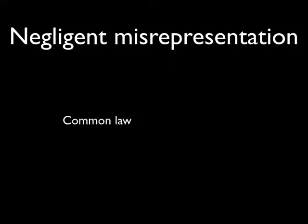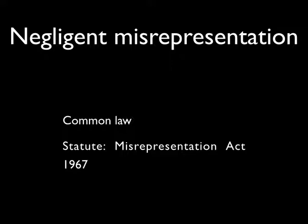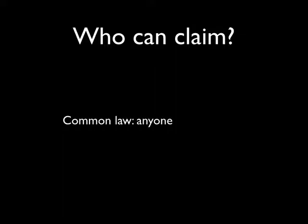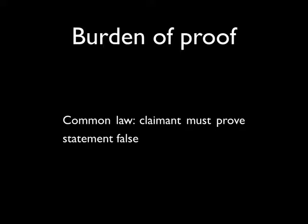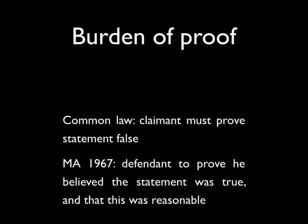The second type of misrepresentation is negligent misrepresentation, and there are two forms of it. There is common law negligent misrepresentation and statutory misrepresentation under the Misrepresentation Act of 1967. There are major differences between these two forms. The first difference is in terms of who can bring a claim: common law negligent misrepresentation can be brought by anyone, not just a party to a contract, whereas statutory negligent misrepresentation can only be made out by a party to the contract. The second major difference is in the burden of proof. Under common law, the onus is on the claimant to prove that the statement was false. Under the Misrepresentation Act of 1967, the burden is on the person who made the statement to prove that he believed the statement was true and that there were reasonable grounds for this belief.